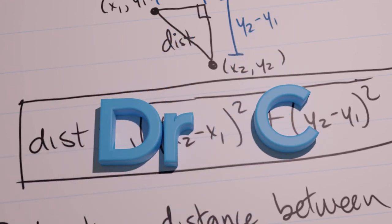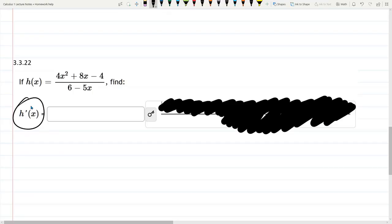This problem we have a derivative to find and we also have a quotient. So let's first start by writing the quotient rule: u over v prime is u prime v minus u v prime divided by v squared.